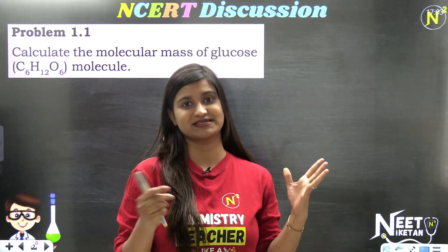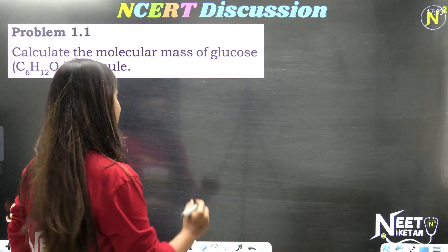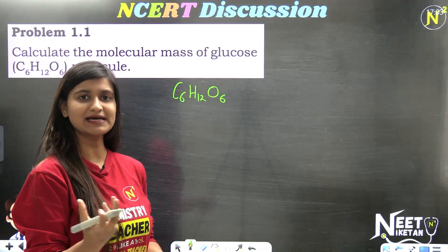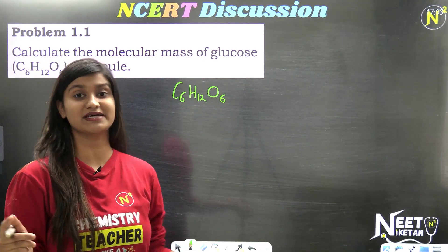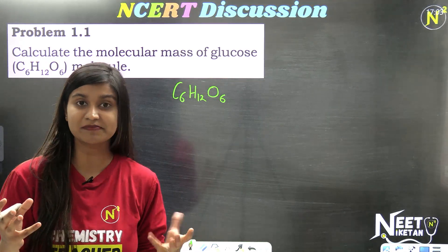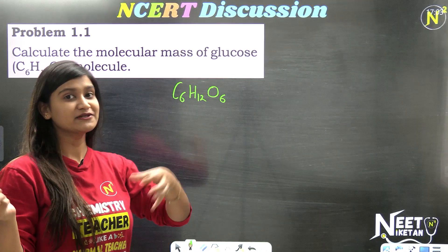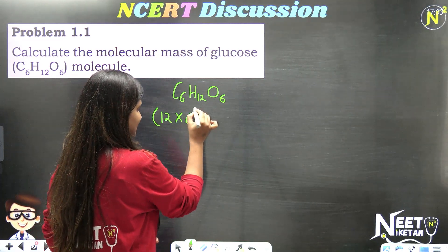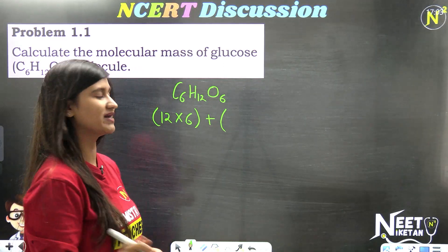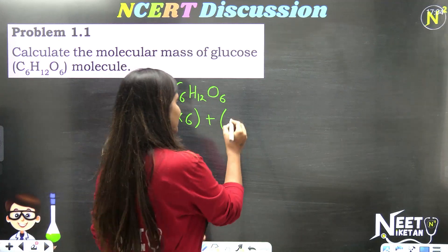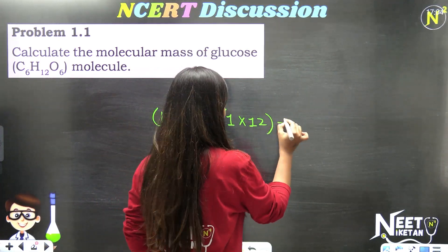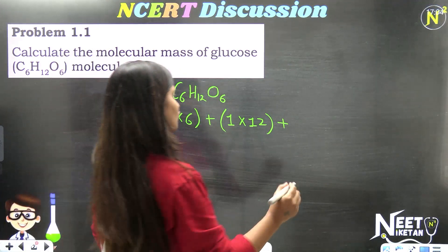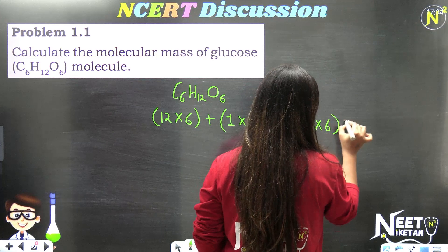Glucose is C6H12O6, right? Very simple question. We have C6H12O6. We will take atomic masses of each element. Carbon ka atomic mass is 12, and there are 6 carbons, so C6 gives 12 × 6. Hydrogen ka atomic mass is 1u, so that is 1 × 12. Oxygen ka 16 hota hai, and we have 6 oxygens, so that is 16 × 6.